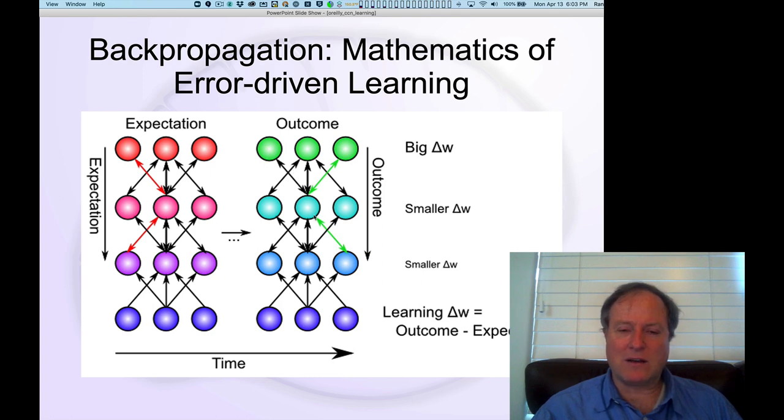And so those bi-directional connections, these top-down connections in particular, are able to essentially communicate this difference, this change in state between the expectation and the outcome reverberates back down to the earlier layers in the network.